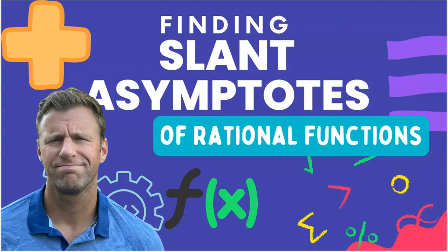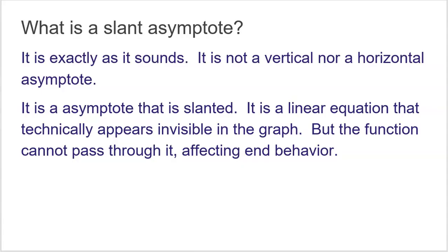In this video we are going to explore finding slant asymptotes of rational functions. A slant asymptote is not a vertical nor horizontal asymptote — it's an asymptote that is slanted. It is a linear equation that appears invisible in the graph, but the function cannot pass through it, affecting the end behavior.